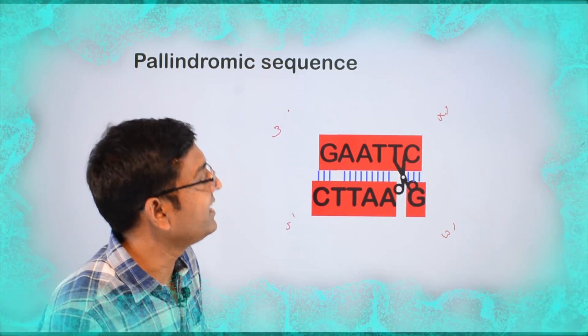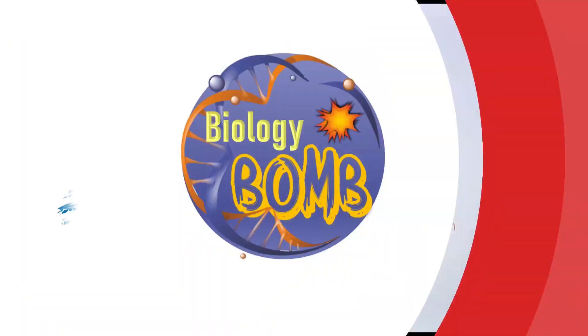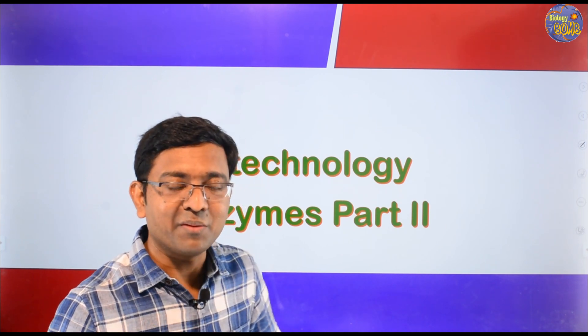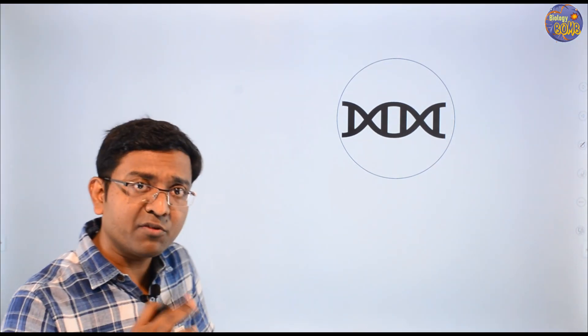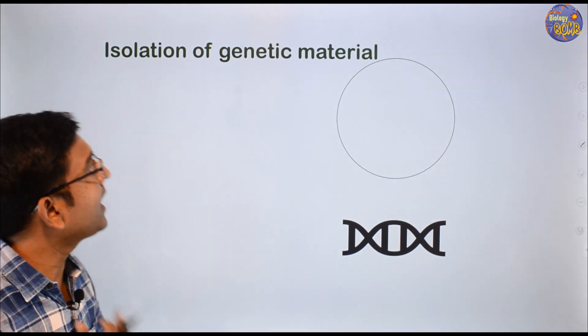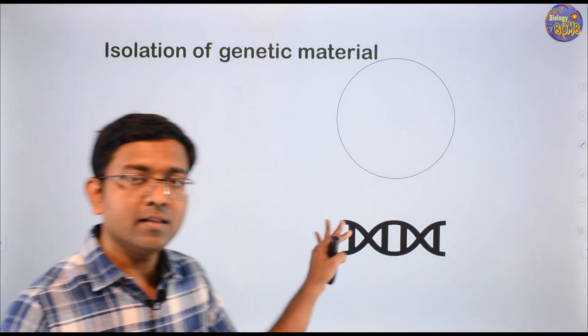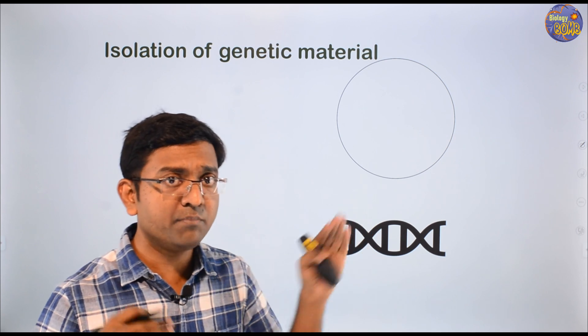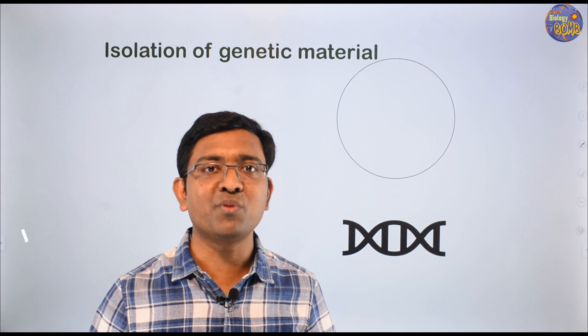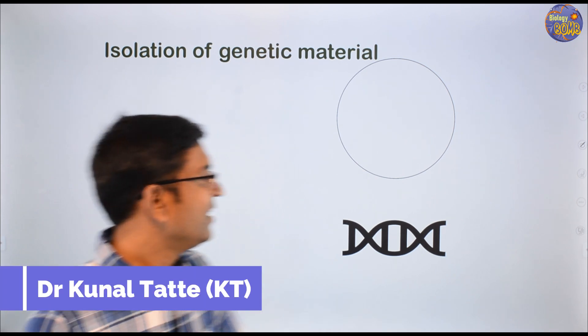Look how beautiful it is cutting the palindromic sequence. Those strands can be changed. Hello guys. Today we will talk about biotechnology enzymes part 2. In part 1 we have seen how to isolate the DNA from a cell — that is isolation of genetic material. I am Dr. Kunal from Biology Bomb. Let's start.